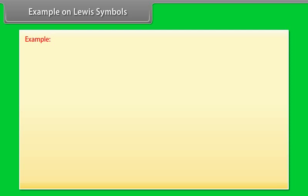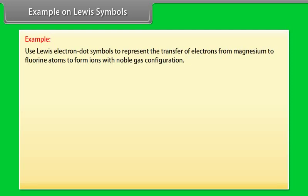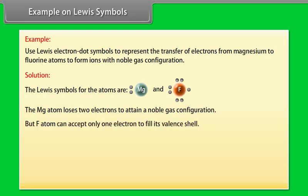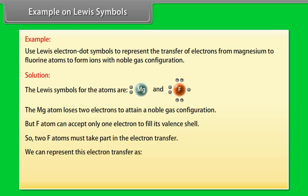Example on Lewis symbols: use Lewis electron dot symbols to represent the transfer of electrons from magnesium to fluorine atoms to form ions with noble gas configuration. The Mg atom loses two electrons to attain a noble gas configuration, but F atom can accept only one electron to fill its valency shell. So two F atoms must take part in electron transfer.